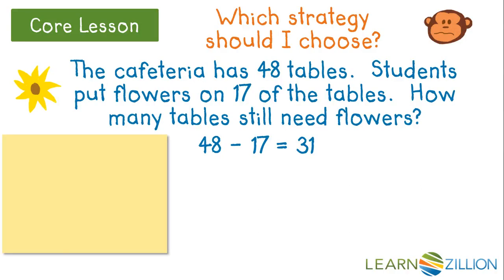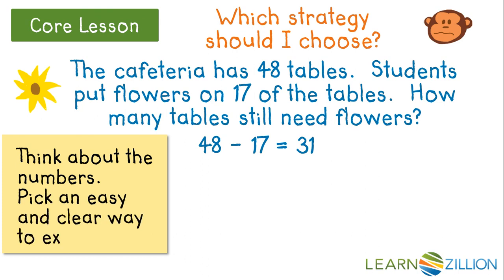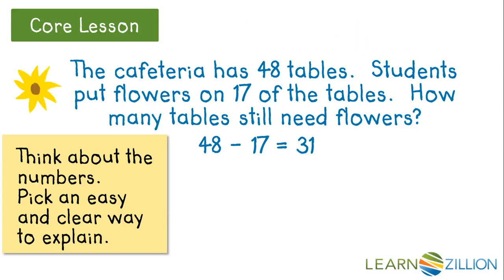When you're choosing a strategy, think about the numbers in the problem. Pick an easy but clear way to explain your thinking. For this problem, the monkey was able to simply subtract ones from ones and tens from tens, so place value is an easy way for him to explain his thinking.